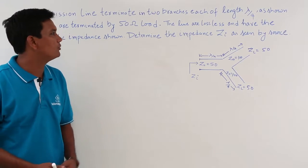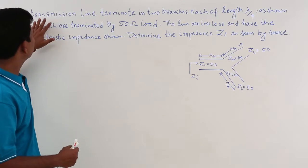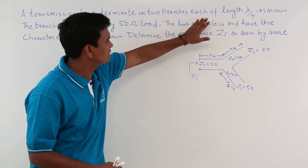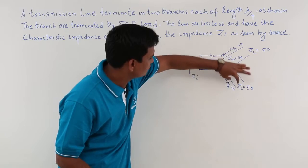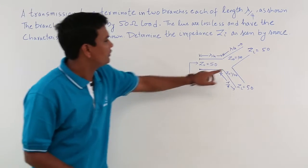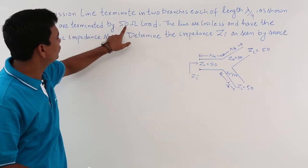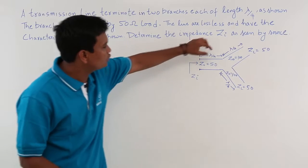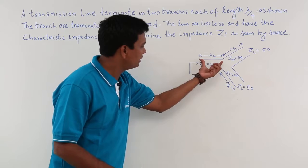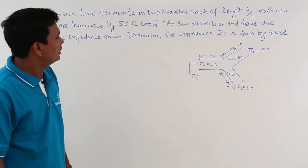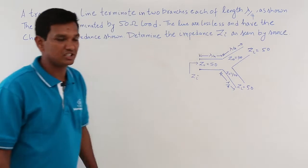In this class, we will try to solve a problem on a transmission line. Let us understand the problem first. It is given that there is a transmission line terminated in two branches, each of length lambda by 4. There are two branches terminated with a load impedance ZL equal to 50 ohm. The length of the two branches is lambda by 4, and it is a lossless transmission line.